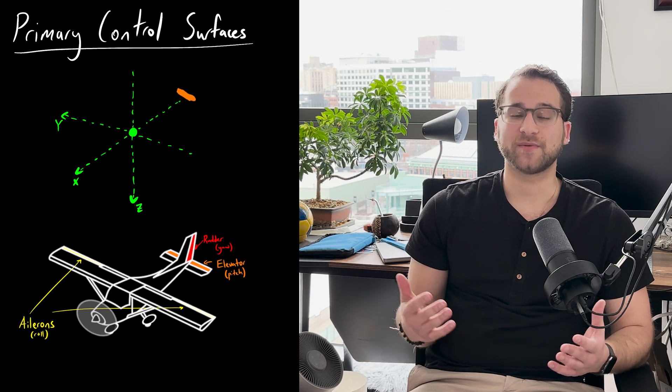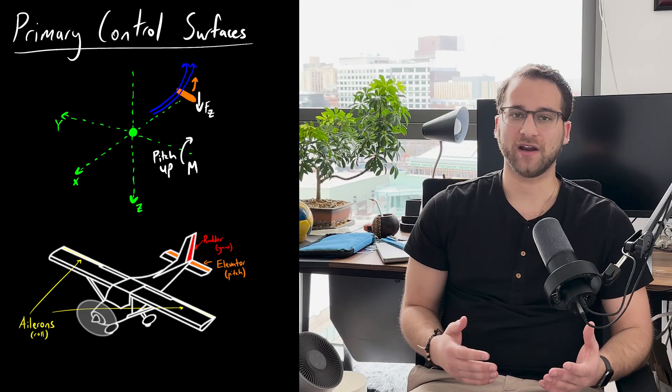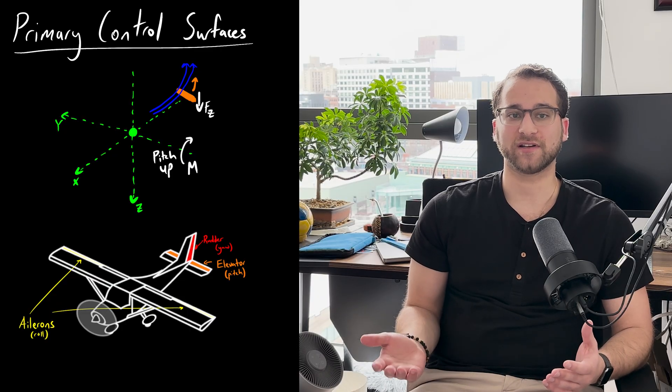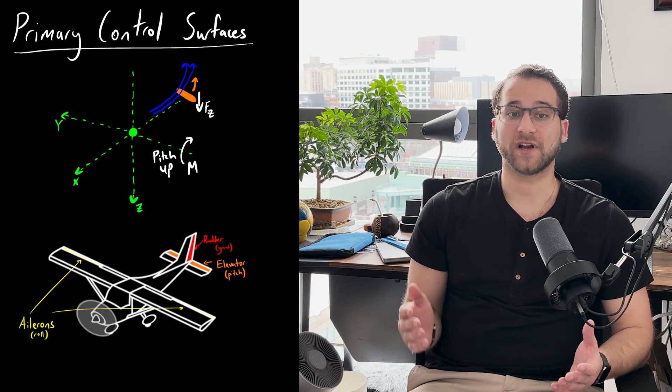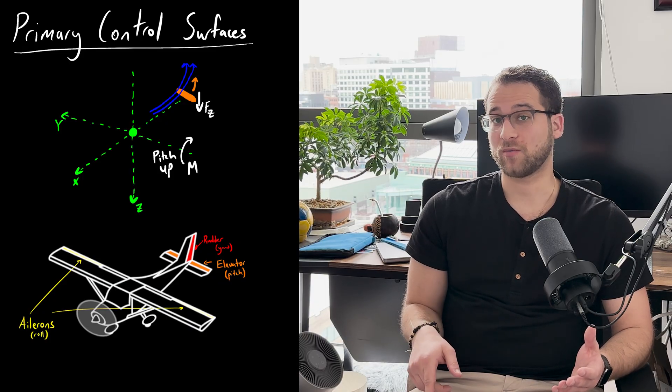The elevator controls the pitch of the plane. Since it's located on the tail of the plane, if it is deflected upwards, the airflow pushes the tail down so the plane pitches upwards. If it is deflected downwards, the plane pitches downwards.